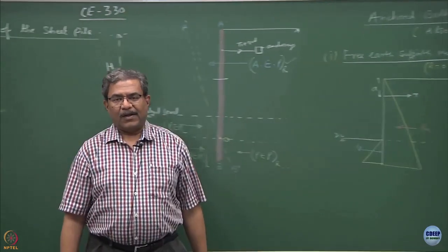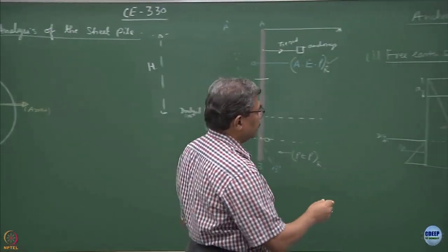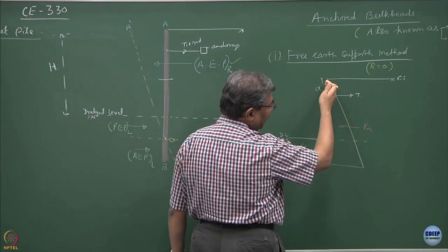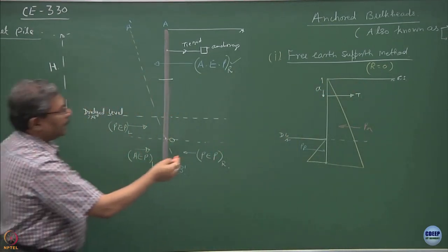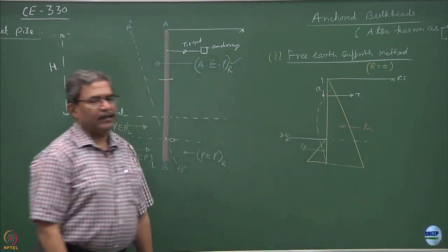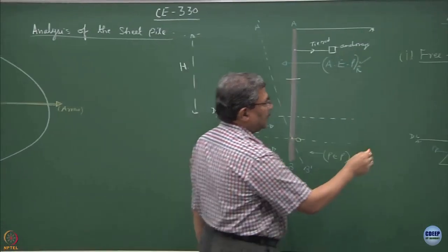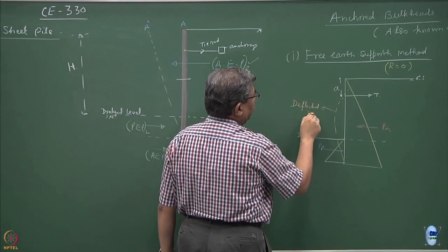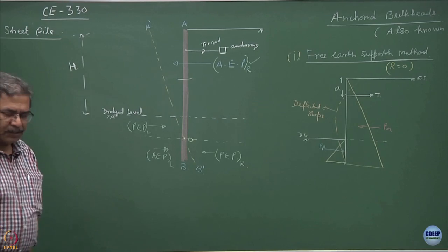Draw the deflected shape in this case. It should start like this because once you are pulling it back, the deflection is going to be inside the backfill. Is this okay? This is the deflected shape of the sheet pile, correct.